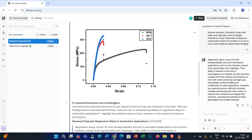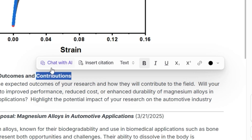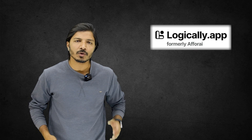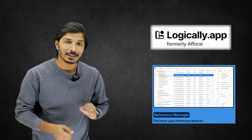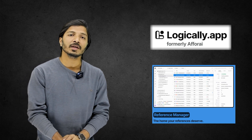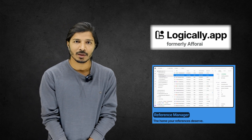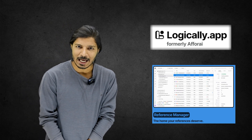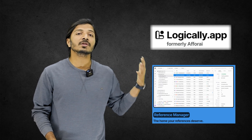Similarly, you can add different tables and equations. If you want to edit any specific text, select it and you'll see text formatting options. Now let's turn to the last point — generating in-text citations and a list of references. This is really the most important step for any research document, and the Logically app has access to over 1,000 different citation styles.